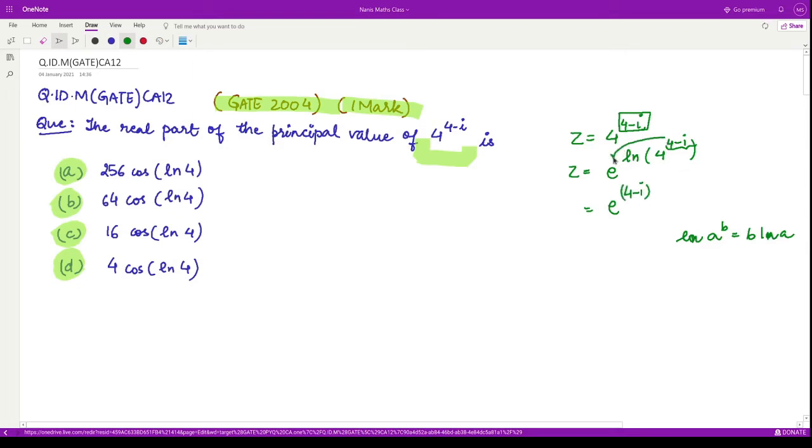Now we can separate the real and imaginary parts. We have e to the power 4 times log 4, and then in multiplication e to the power minus iota ln of 4.